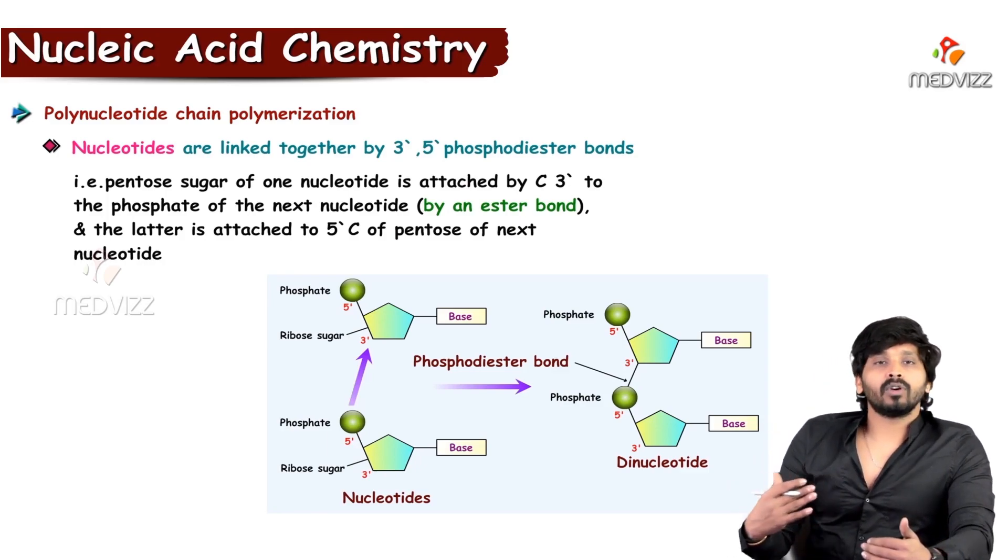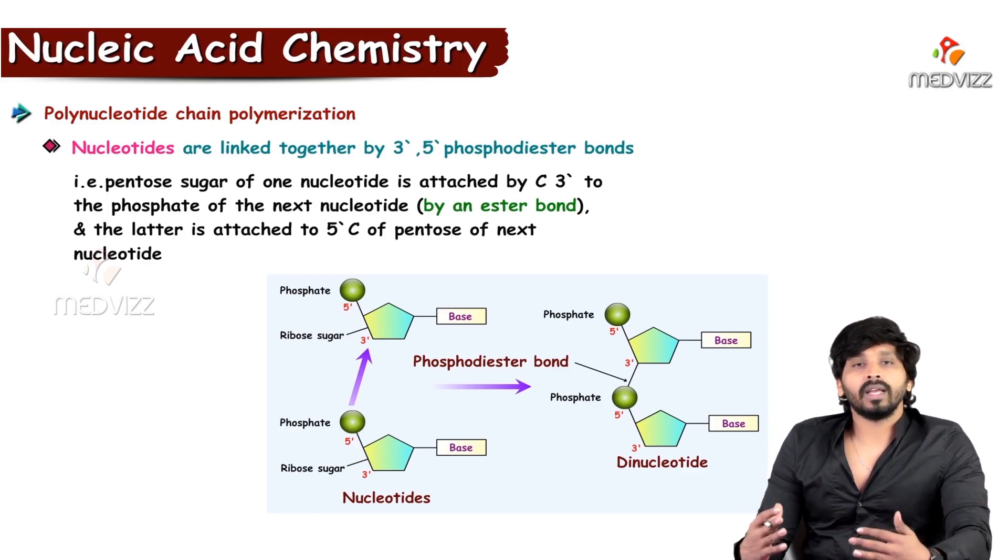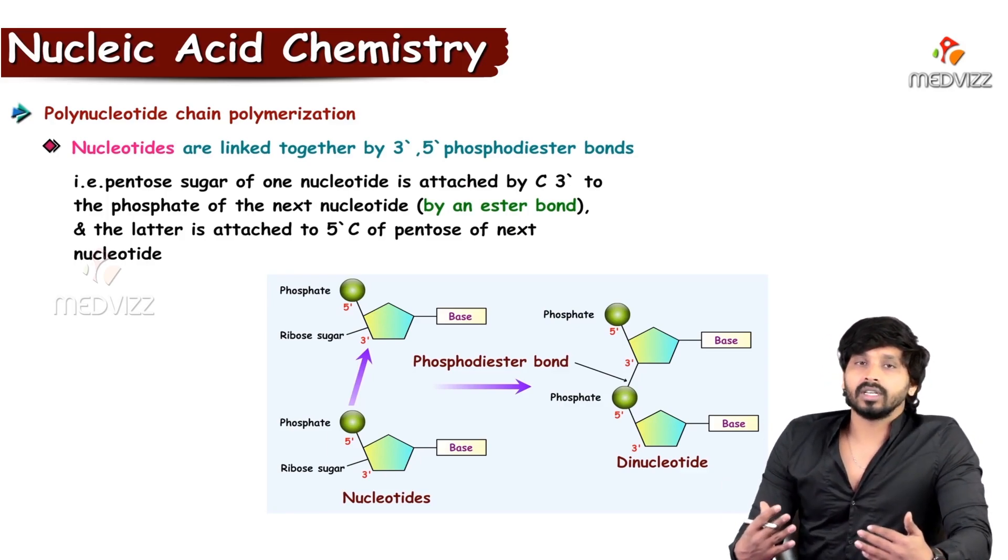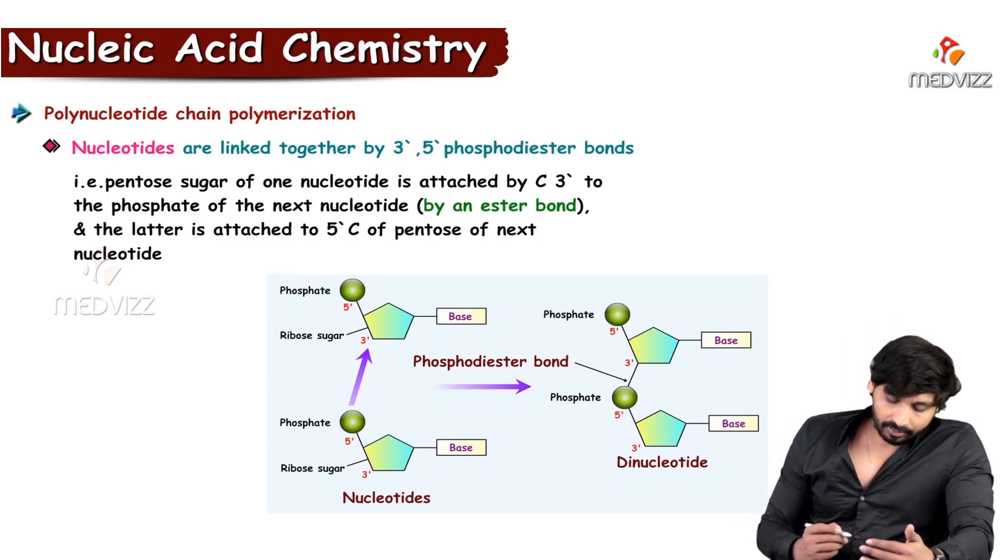Similarly, here, the monomeric forms of nucleotides are held together by phosphodiester linkage. And how is this phosphodiester linkage formed? You see here in the picture what I have shown.